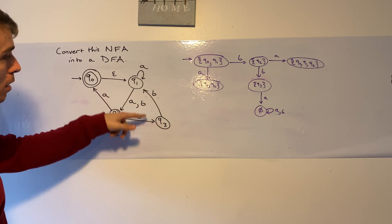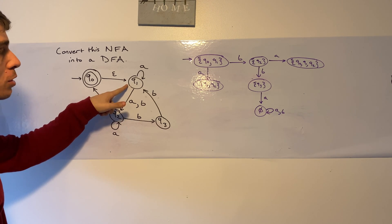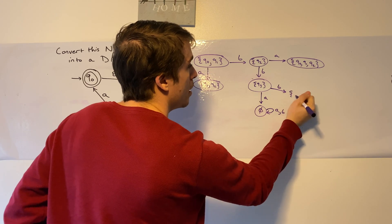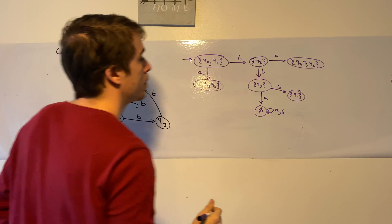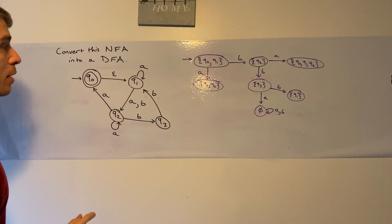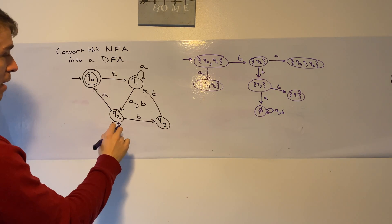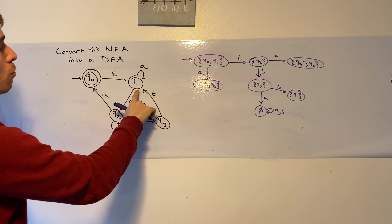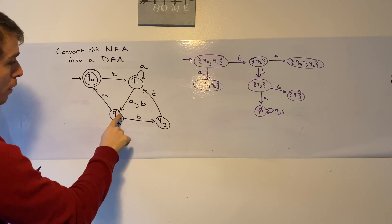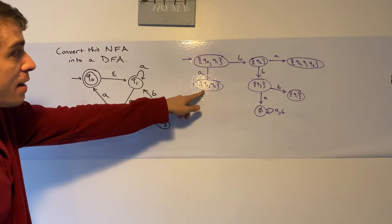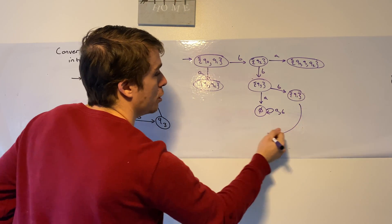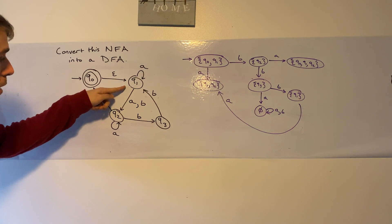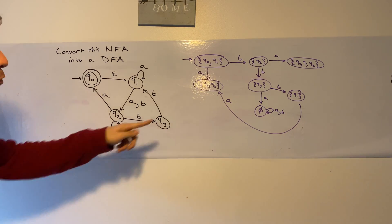Q3 on B goes to Q1. The epsilon closure of Q1 is itself. So on input B, Q3 goes to state Q1 — we haven't made that state yet. From Q1 on input A, we can go to itself or Q2, but we already have that state {Q1, Q2}. On input B from Q1, we can only go to Q2, and we already have that state too.